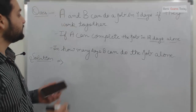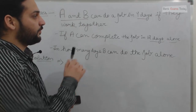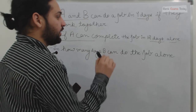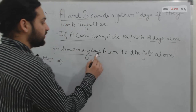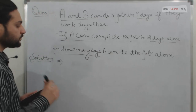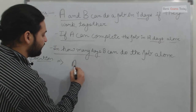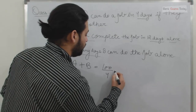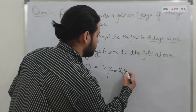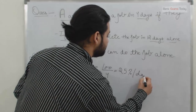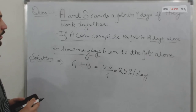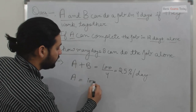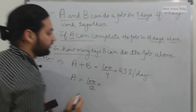Let's take another example. If A and B can do a job in 4 days working together, and A can complete the job in 12 days working alone, in how many days can B do the job alone? The combined efficiency of A and B is 100 divided by 4, which equals 25 percent per day.